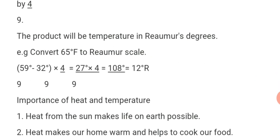Let's look at an example. Convert 65 degrees Fahrenheit to Réaumur scale. That is: 59 minus 32 degrees, multiplied by 4 over 9. Subtracting 32 from 59 gives 27 degrees. Multiplying 27 by 4 gives 108. Then 108 divided by 9 gives 12 degrees. So our final answer is 12 degrees Réaumur.